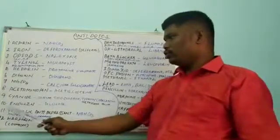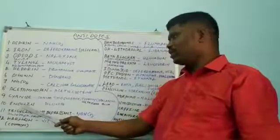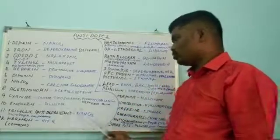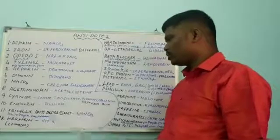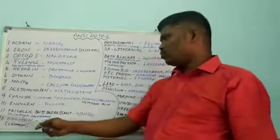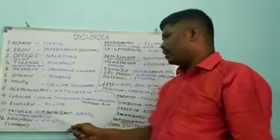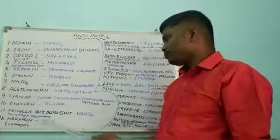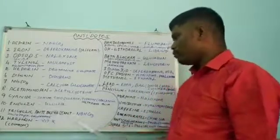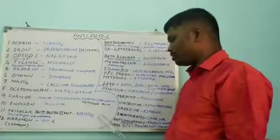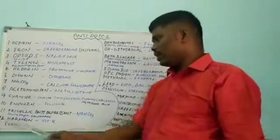Next drug is insulin. In insulin overdose or insulin toxicity, glucose or glucagon is used as an antidote. Next drug is tricyclic antidepressants like amitriptyline and imipramine. In tricyclic antidepressant overdose, sodium bicarbonate is used as an antidote.